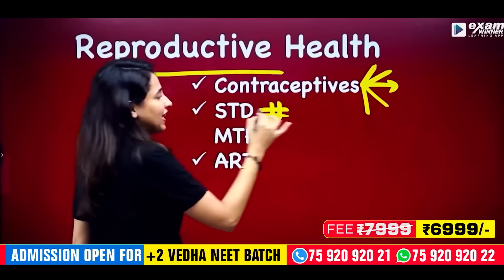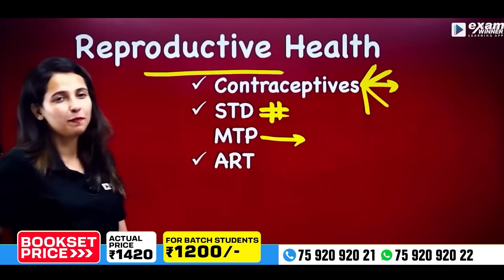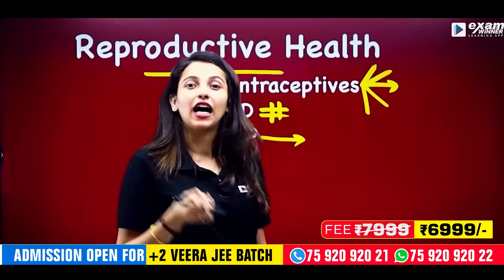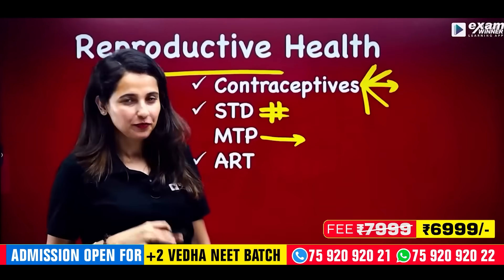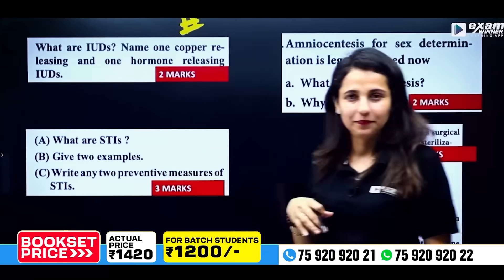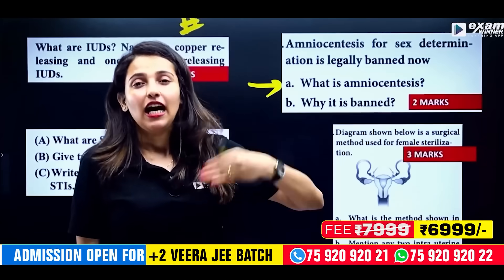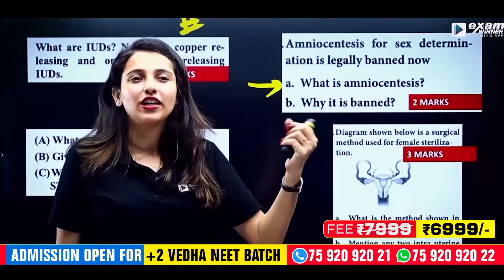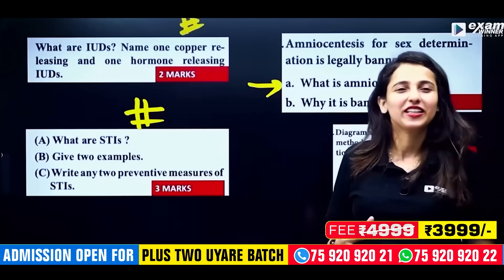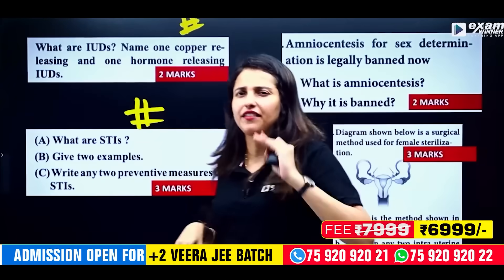Then the most important area is STD — Sexually Transmitted Diseases. It comes in the question paper, very important. Then medical termination of pregnancy. Short forms we will expand: GIFT, IUD, IVF. The prediction: IUDs — three types of IUDs with examples. What is amniocentesis? What are we detecting? STD questions — how to study sexually transmitted diseases, 4 examples, and prevention — very, very important questions.